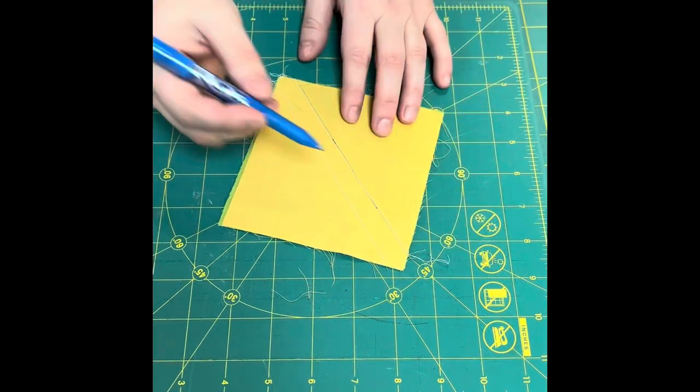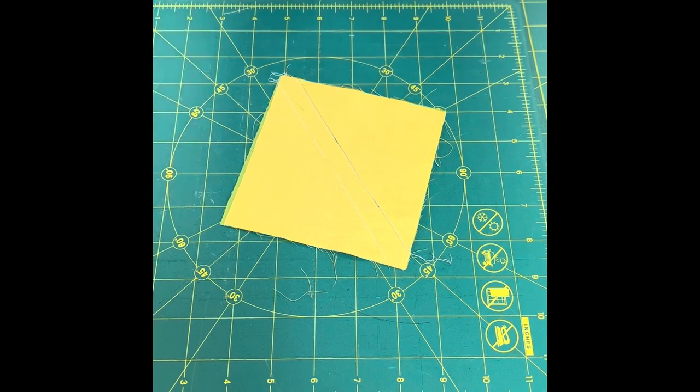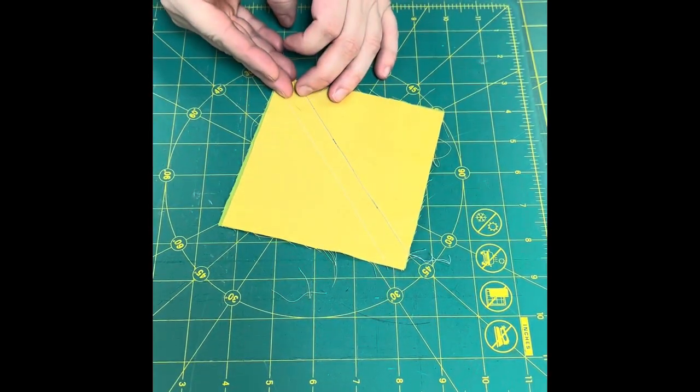So now I've marked both my lines. I've pre-prepared this fabric so you'll see that I already have sewn them. Once they're marked I take it to the sewing machine and I sew both of my seams.